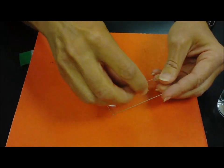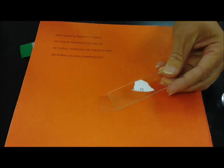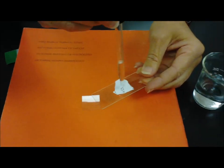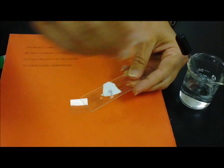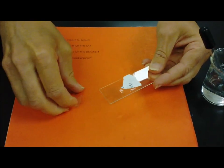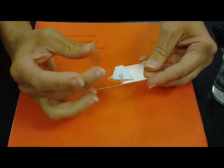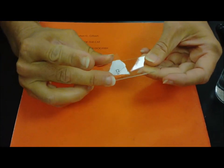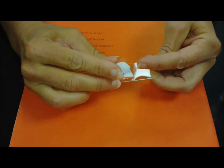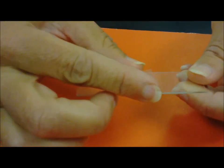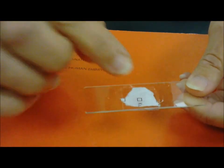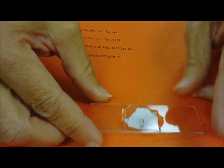So to make a slide, I simply put my item that I want to look at on the slide and add some water. A drop or two should be enough. And then when I'm putting the cover slide on, I want to put it on at an angle and sort of let it drop from one side to the other so that it will squish the water out and not create a bubble.